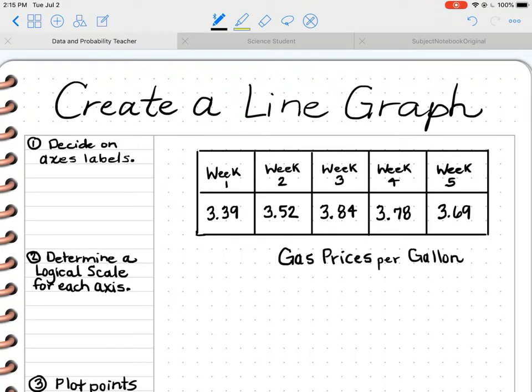The first thing we need to do is decide on our axis labels. Remember, the x-axis runs left to right, and the y-axis runs up and down. For this particular graph, I want to let the prices, the dollar amounts, be the y-axis, and the x-axis will be the week numbers. You need to figure out where the data makes most sense on a graph.